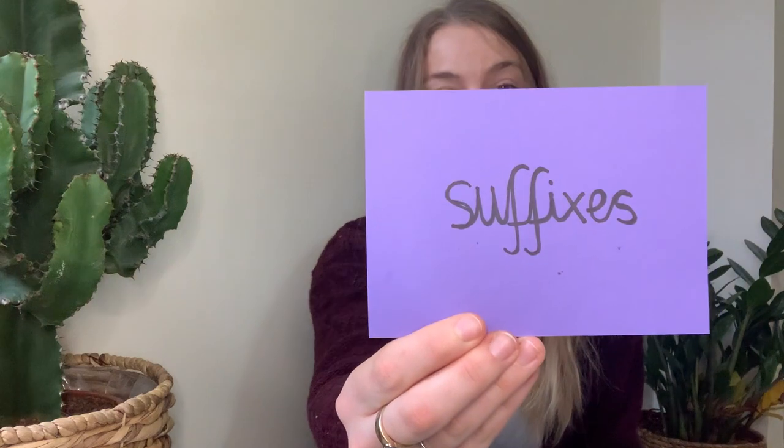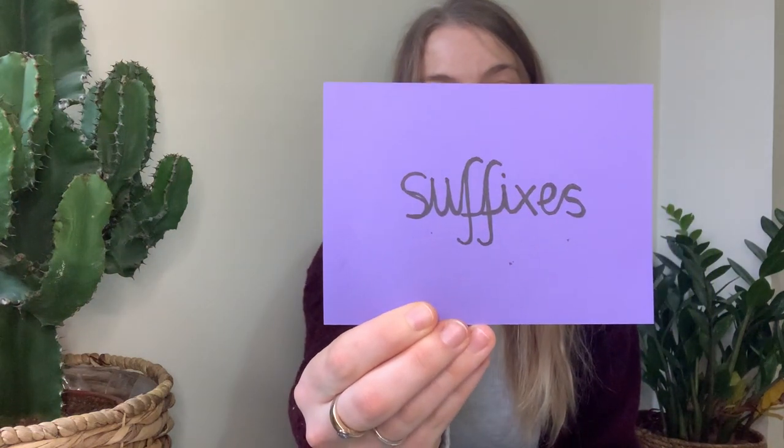The next skill that you are going to come across is suffixes. You might recognise this word from some of your spelling lessons. Suffixes are letters that we place at the end of a word that change the meaning of them. You will focus on two key suffixes in this unit — you'll find out what they are later in your lessons.